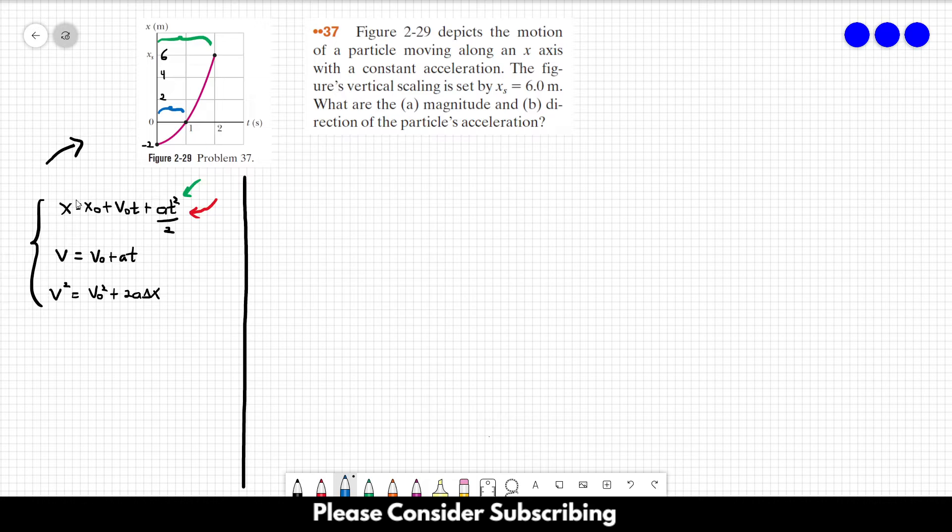For the blue part, the final position is 0. So 0 equals x_0, which is minus 2, plus the initial velocity that we don't know. This time, t_1, which equals 1 second, plus the acceleration that we also don't know, times 1 squared over 2. And then we have that 0 equals minus 2 plus v_0 plus a over 2. So this is the first equation.